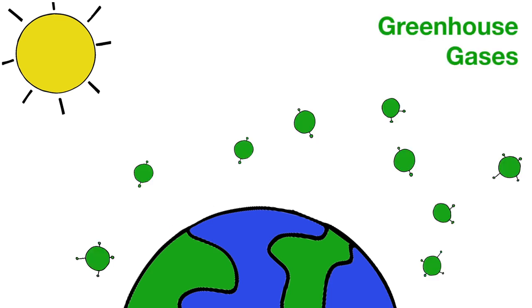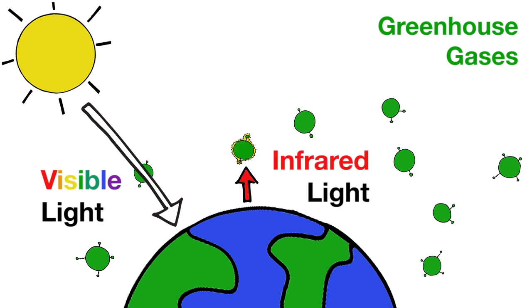Greenhouse gases in the atmosphere, such as methane and carbon dioxide, let visible light pass through but absorb infrared light, causing the atmosphere to retain heat.